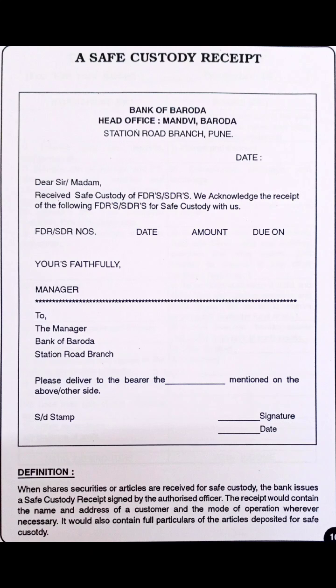Definition: when shares, securities, or articles are received for safe custody, the bank issues a safe custody receipt signed by the authorized officer. When we keep our items in the bank's safe custody we receive a safe custody receipt — that is the specimen we need to prepare. The receipt contains the name and address of the customer, the mode of operation when necessary, and full particulars of the articles deposited. Just practice it and you will be able to draw a perfect specimen.